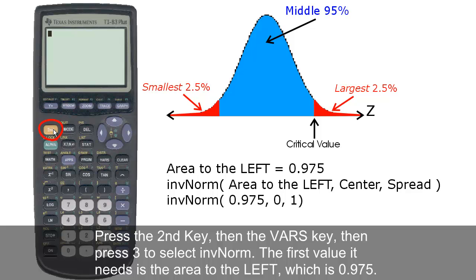Press the second key, then the vars key, then press 3 to select inverse norm. The first value it needs is the area to the left, which is 0.975.